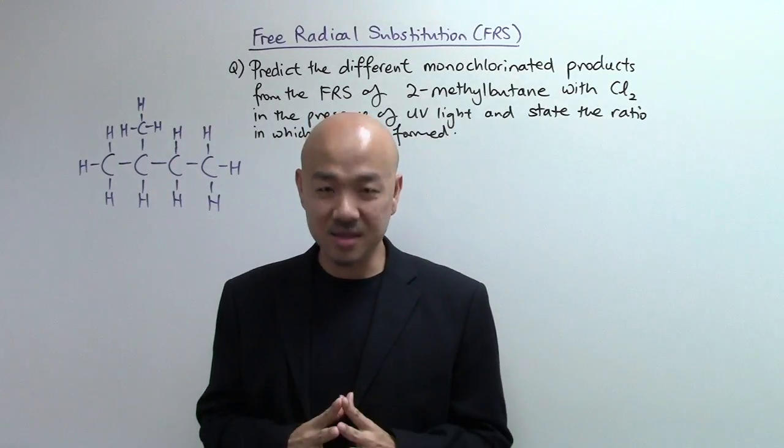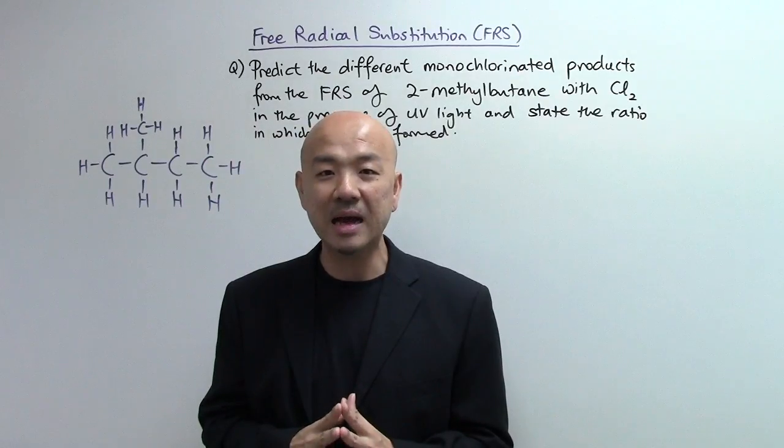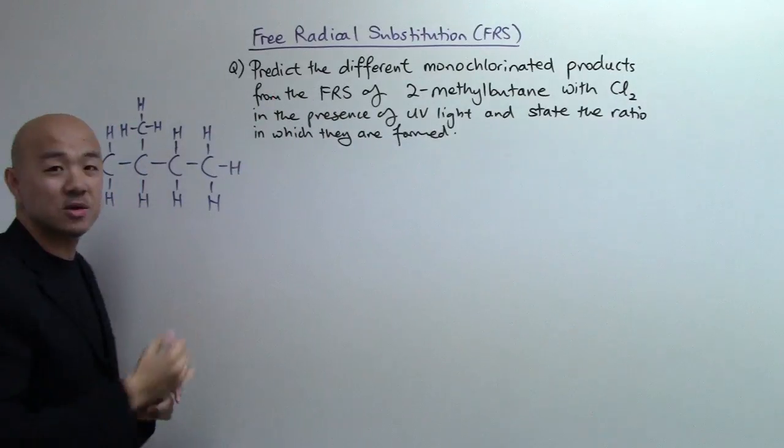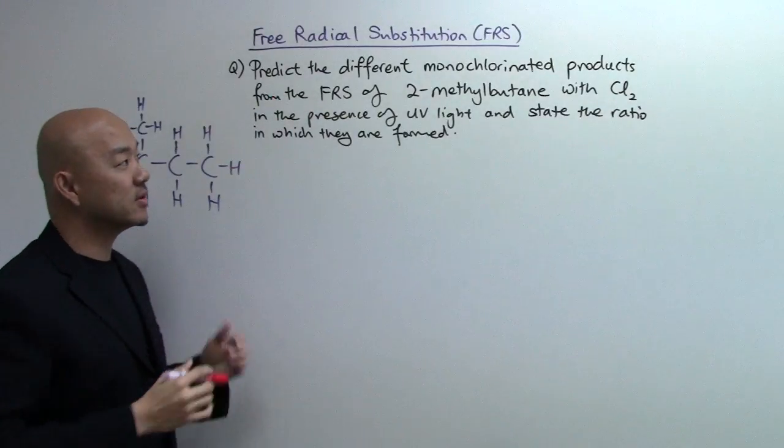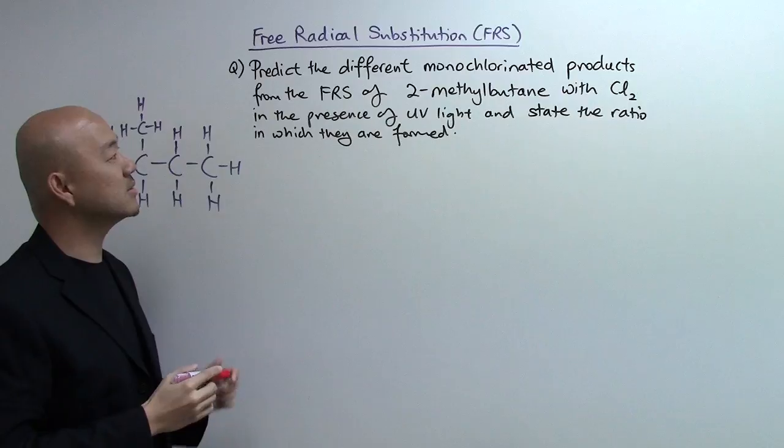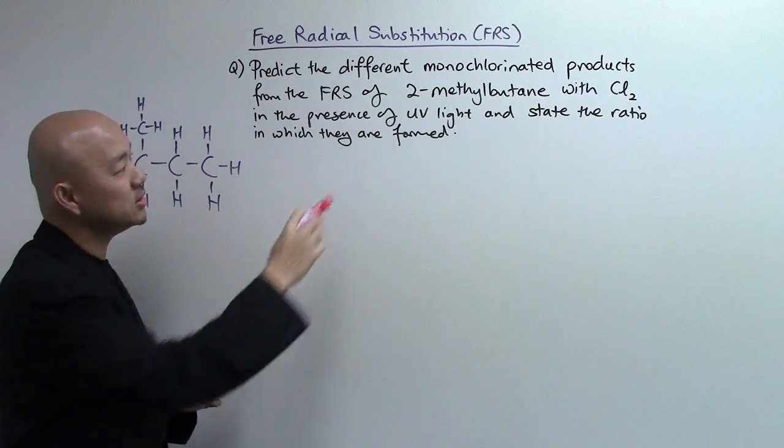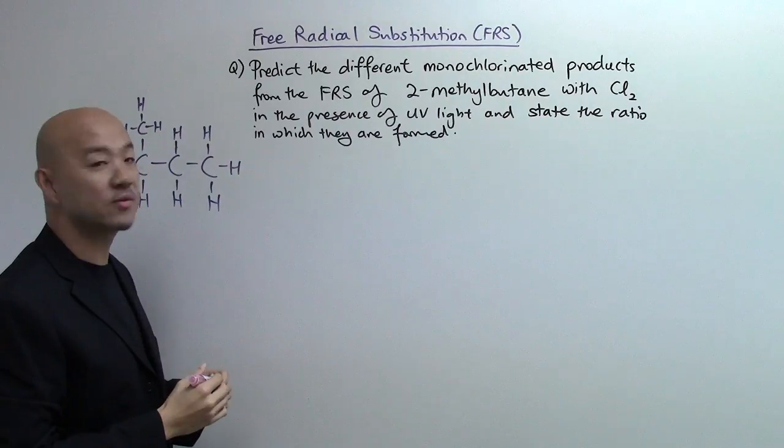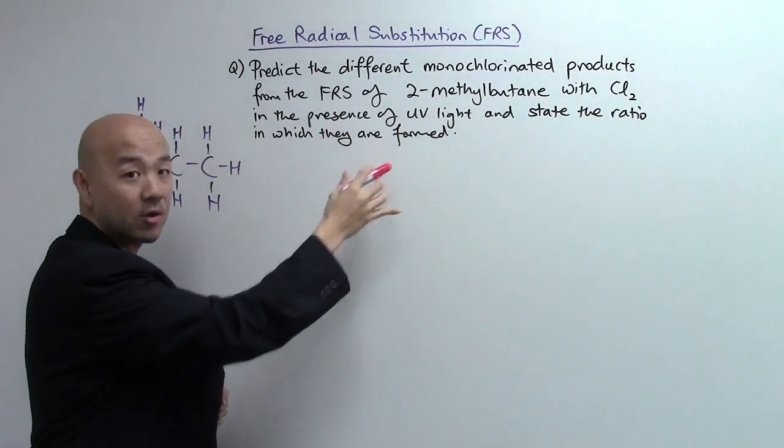Now let's take a look at a question to see how this is being tested in the exam. The question goes like this: Predict the different monochlorinated products from the free radical substitution of 2-methylbutane with chlorine in the presence of UV light and state the ratio in which they are formed.